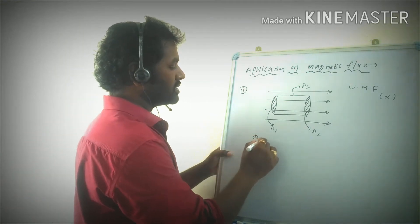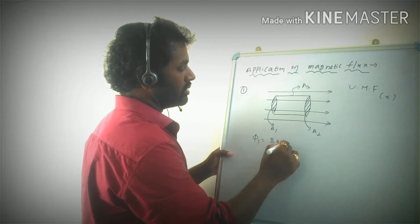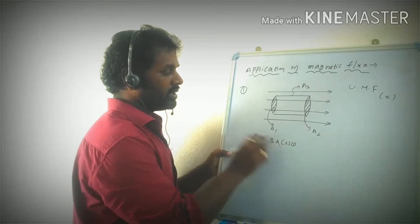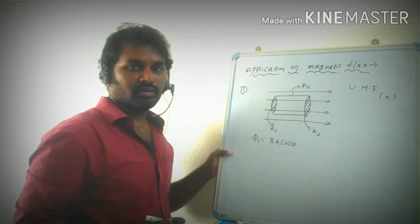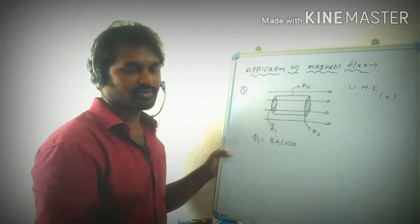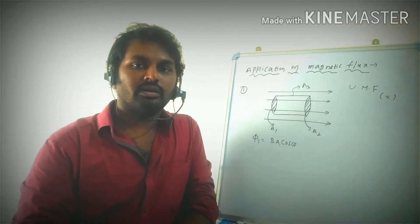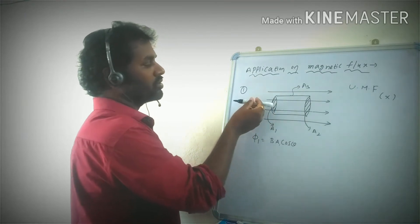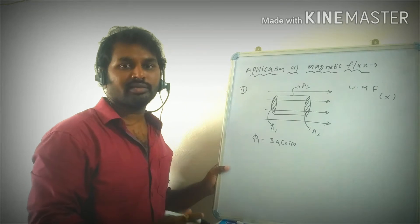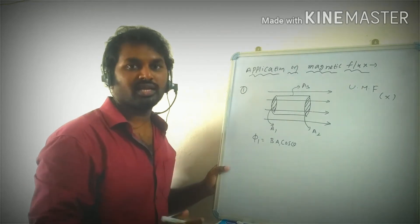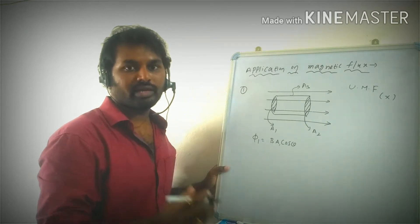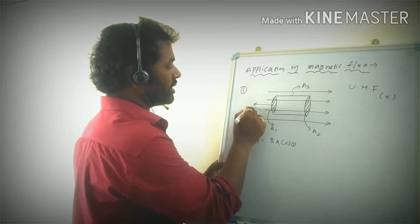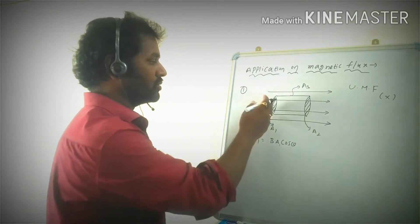Using the formula phi1 = B·A·cosθ, where A is taken as A1. To find the angle between B and A1, we first assign a direction to the aerial vector. The aerial vector is always perpendicular to the surface. For an object with more than one surface, conventionally the aerial vector is in the outward direction — which here is toward the left for surface A1.